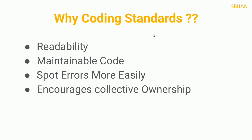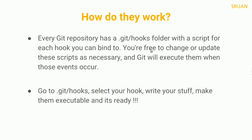So how do they work? Every git repository has a .git/hooks directory with a script for each hook you can bind to. You are free to change and update these hooks as necessary, and git will execute them when those events occur. Go to the git directory, select your hooks, write your script, make them executable and it's ready. Just make sure that you remove the .sample extension while executing the script.